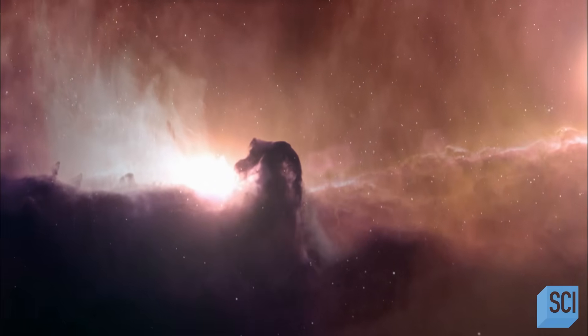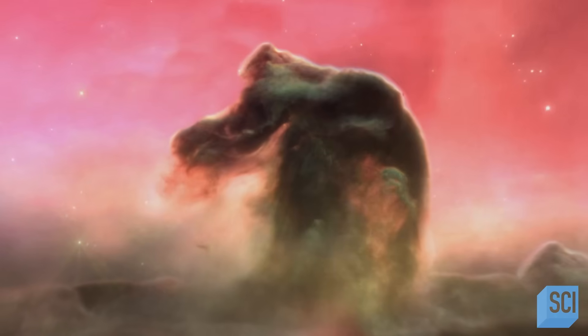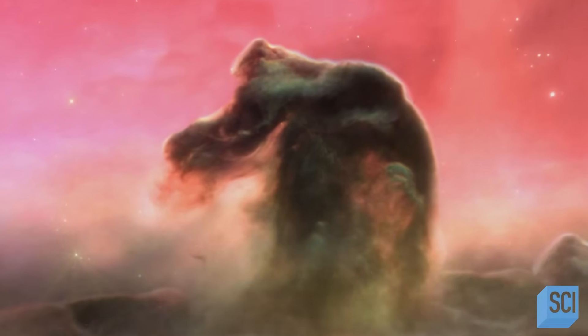Dense clouds of dust block out visible light from the stars behind, creating shadowy shapes like the Horsehead Nebula.